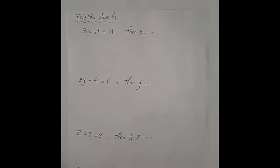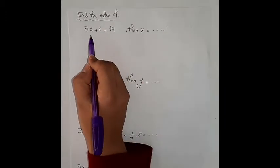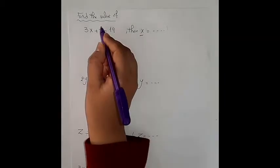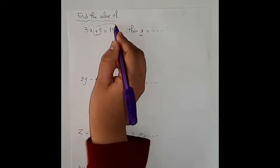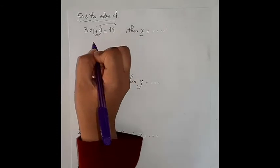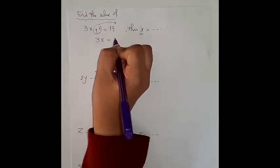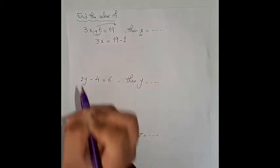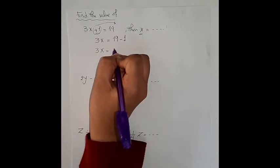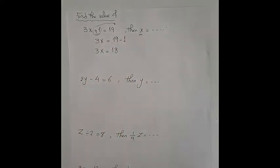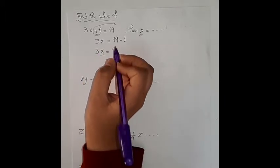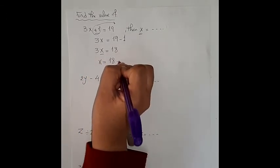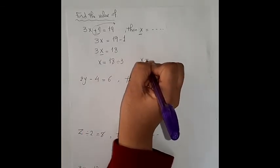Now let's answer some questions. Find the value of x: 3x plus 1 equals 19. To get the value of x I should move away its neighbor. Here we have plus 1, so it moves to the other side with an inverse operation, which is minus. So 3x equals 19 minus 1 equals 18. To get the value of x, 3 is multiplied by x so the inverse operation is divide: x equals 18 divided by 3, so x equals 6.